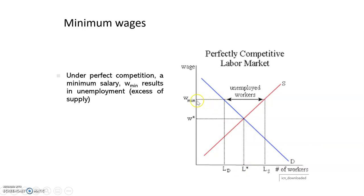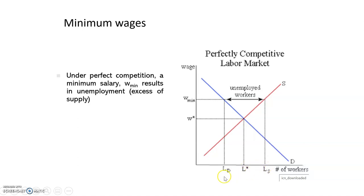And what happens with the supply? As the salary has increased and the supply has a positive relationship with the wage, there will be more workers who will want to be working. The supply of workers will be LS compared with L star, so it has increased. And we have a difference between the supply and the demand when we have a higher salary.